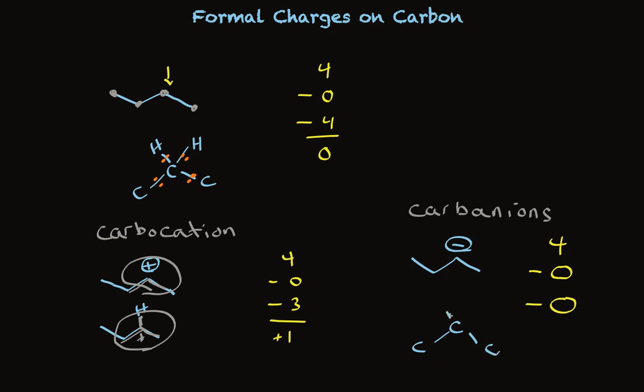We could fill in the three there. To get to minus one, we need to have this number be a two, which tells us that when we see a negative charge on carbon, we should expect to see an unshared pair. Four, minus two, minus three is minus one. So there's our negative charge.